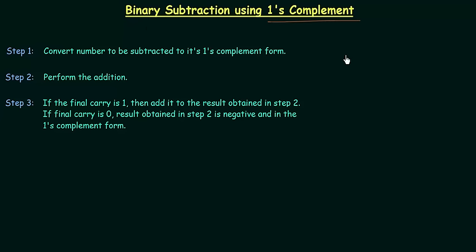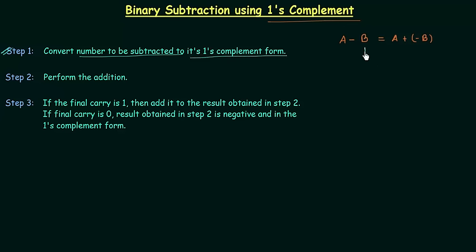If I want to subtract b from a, I will write a minus b. This is direct subtraction. I can also write this as a plus of minus b. So the first thing we have to do is find out the negative of b. From step number one, we have to convert the number to be subtracted — b in this case — to its one's complement form. One's complement of any number is equal to negative of that number, so one's complement of b is equal to minus of b.